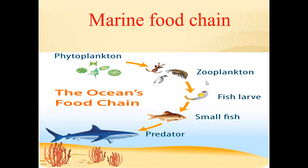The producers are eaten by zooplankton — small organisms — and these zooplankton would be eaten by fish larvae. The fish larvae will be eaten by small fish, and the small fish will be eaten by a whale or shark. So the marine food chain is a food chain found in seas or oceans.